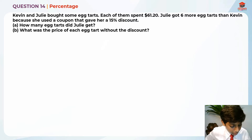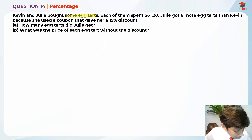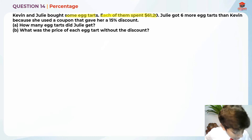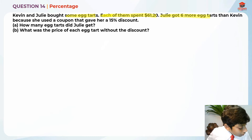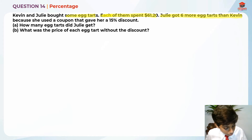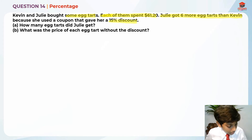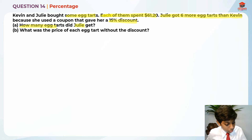So let's highlight the key information. They bought some egg tarts and each of them spent $61.20, so both of them spent the same amount of money. But Julie got 6 more egg tarts than Kevin because she used a coupon that gave her a 15% discount. And they're asking us how many egg tarts did Julie get.